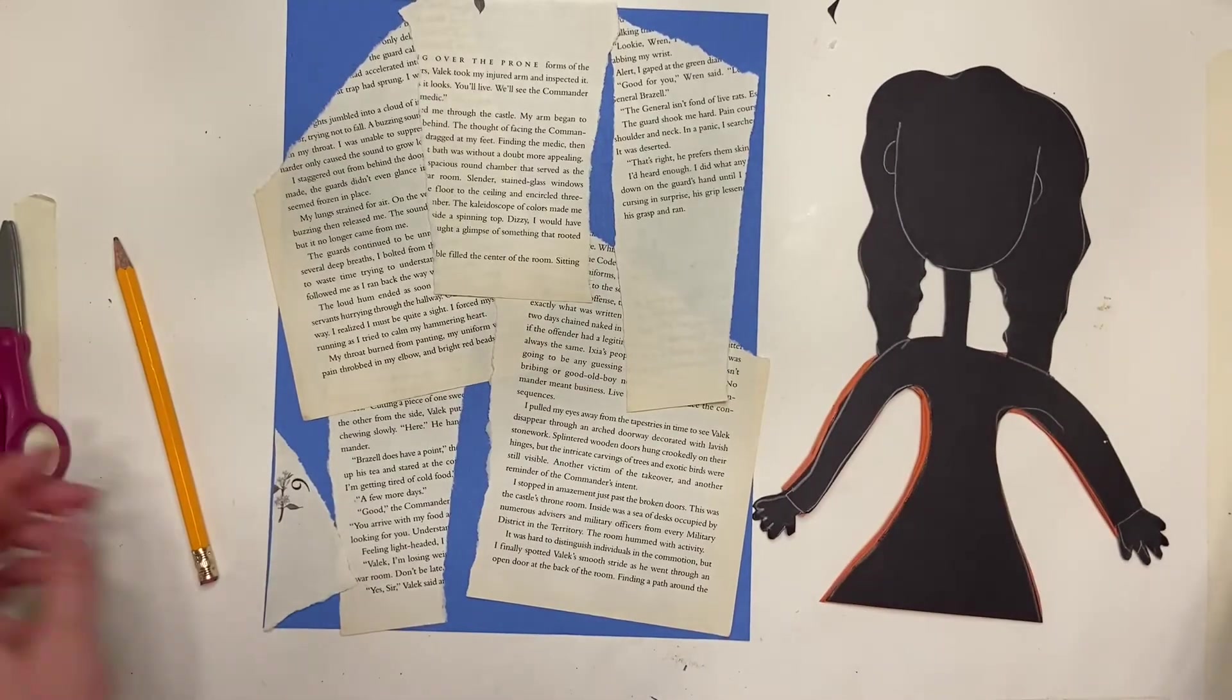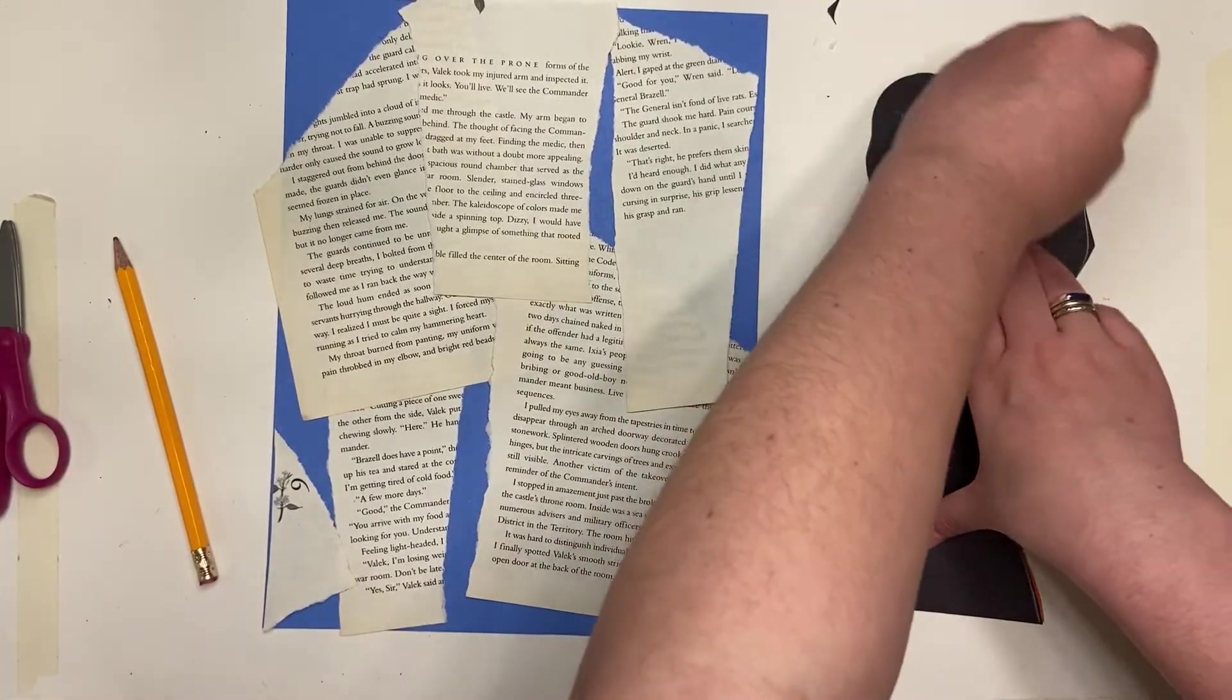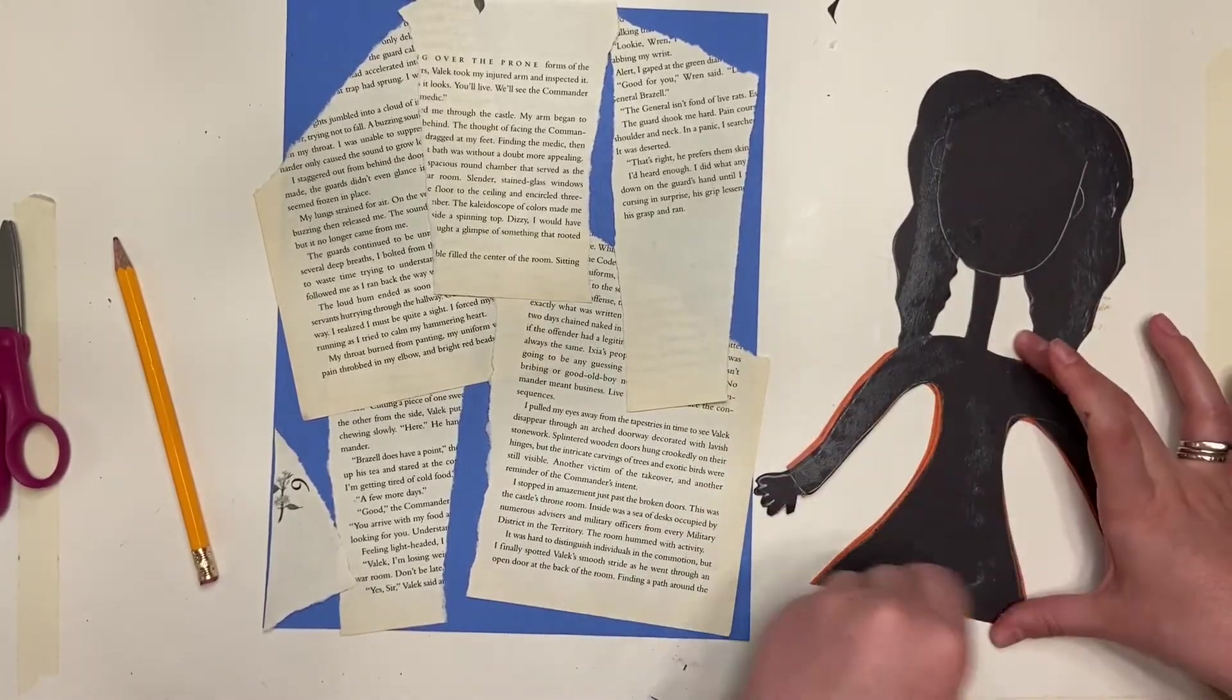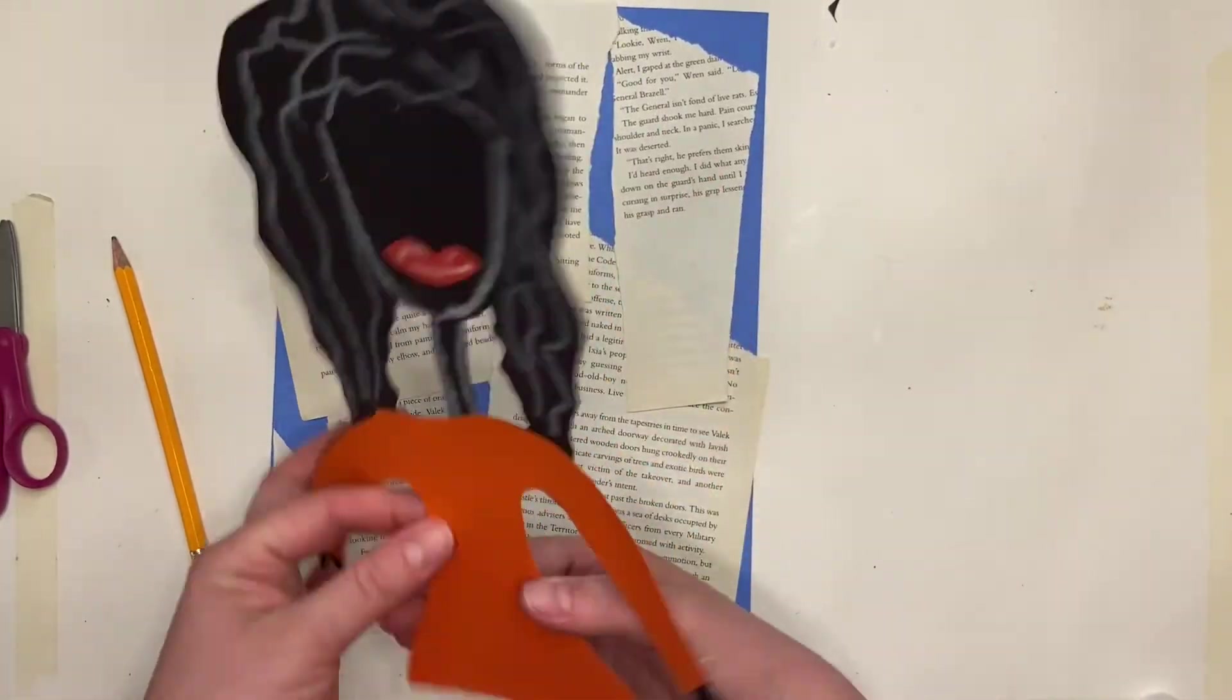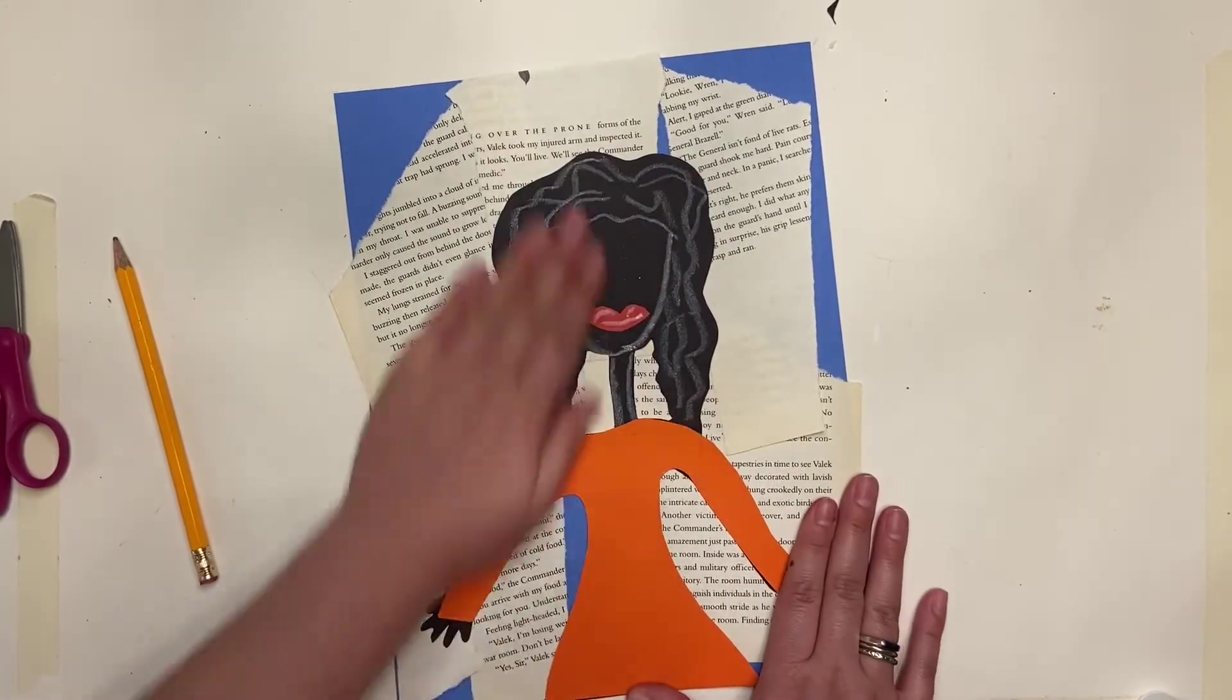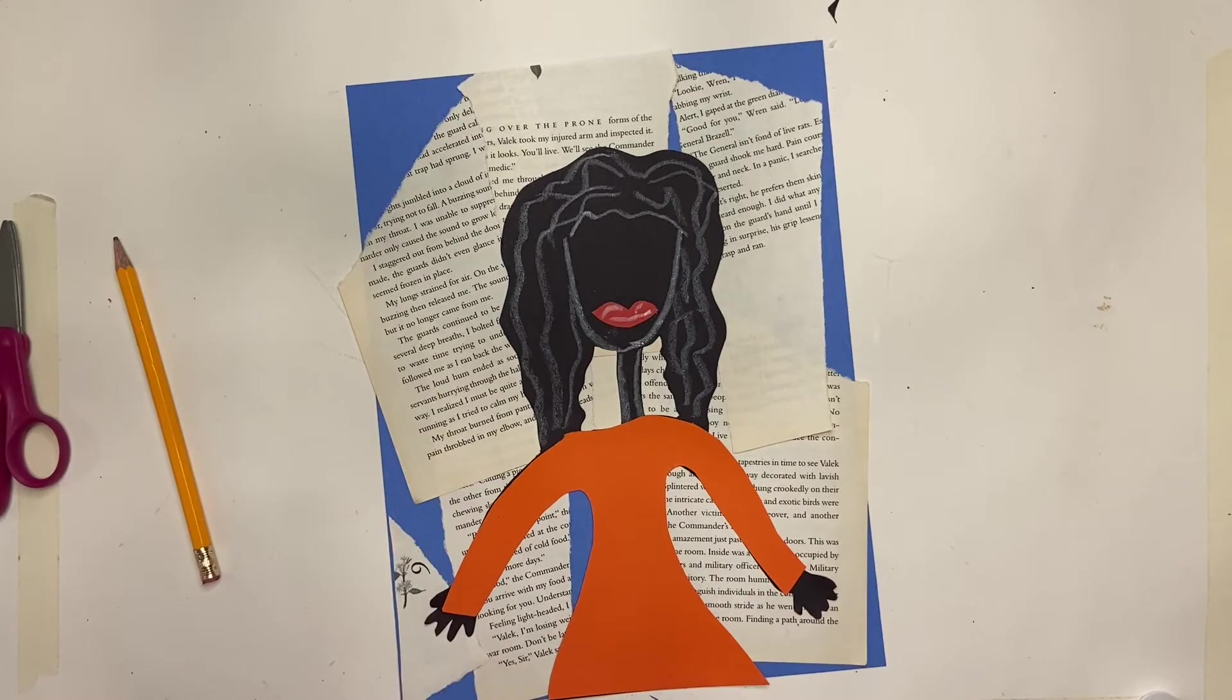For this version, the last thing I need to do is glue my silhouette to my background. So go around the edge of your person and then line it up with the bottom, the two straight edges. All right. That is the first way if you have colored paper.